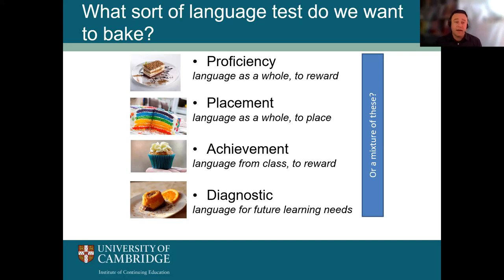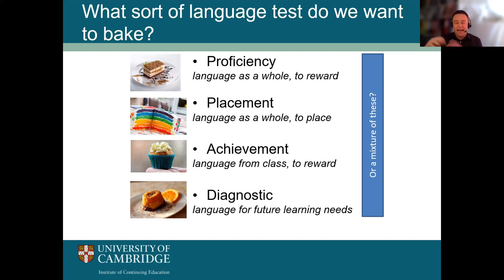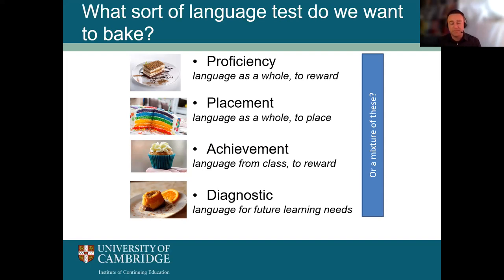Or another type is the diagnostic test, where we assess a candidate's language ability in order to inform teachers about what their future learning needs might be — so a teacher can plan and say, this group of students may be weaker at a particular point of grammar, and therefore the test has informed me what to focus on for this learner or group. Obviously you can use one test to do a range of these different things, but it's important first to work out what the ultimate point of the language test you want to create is.